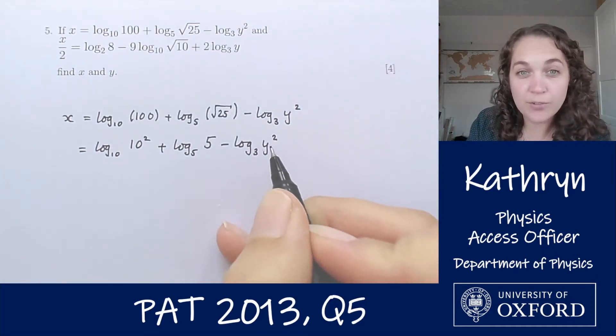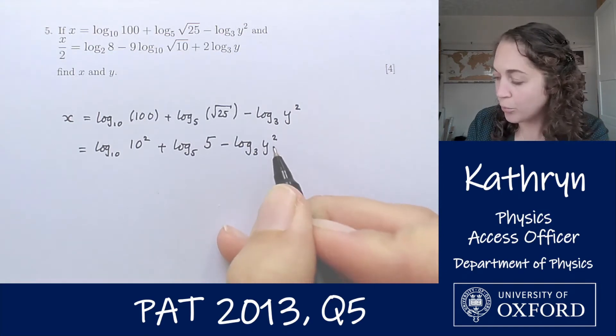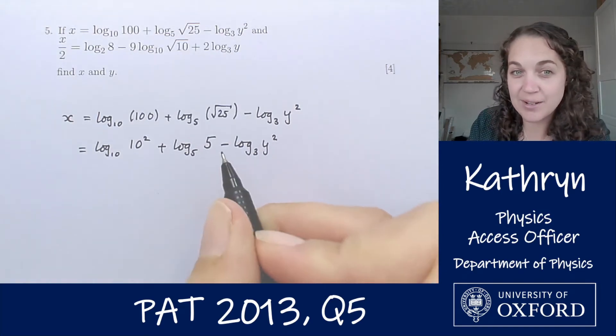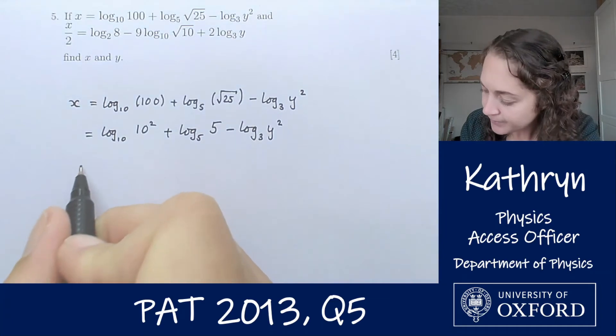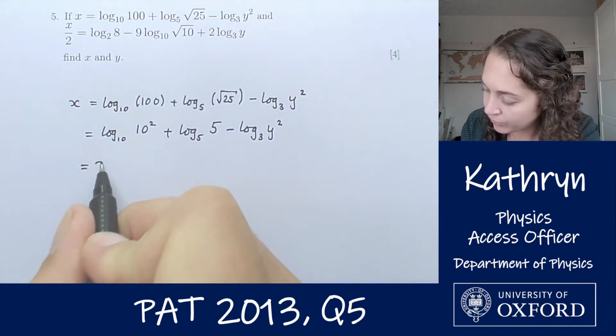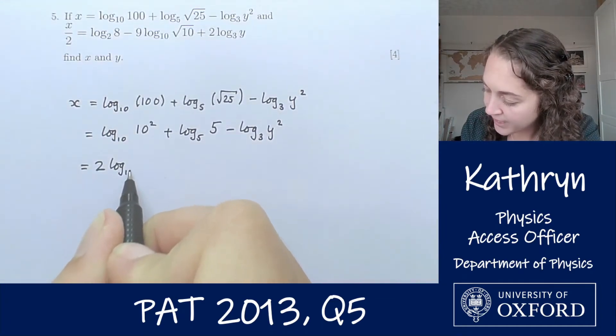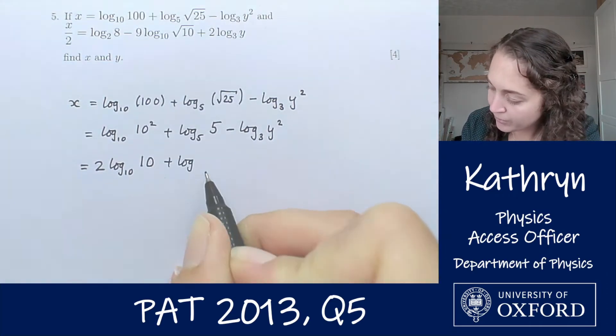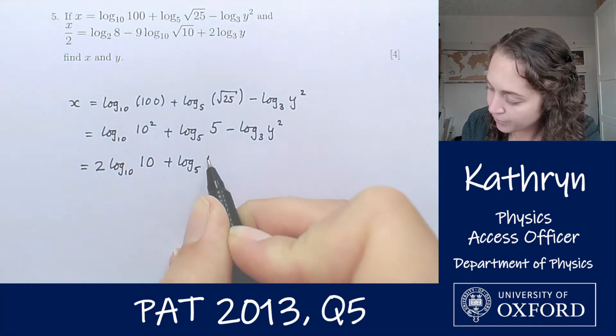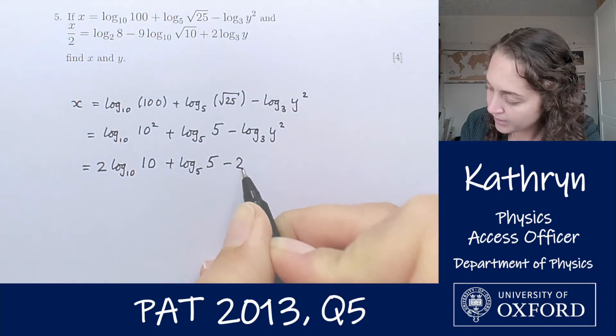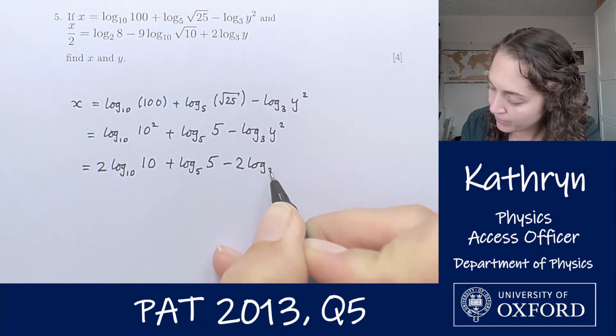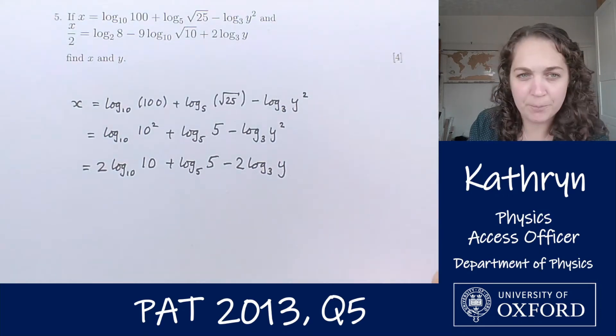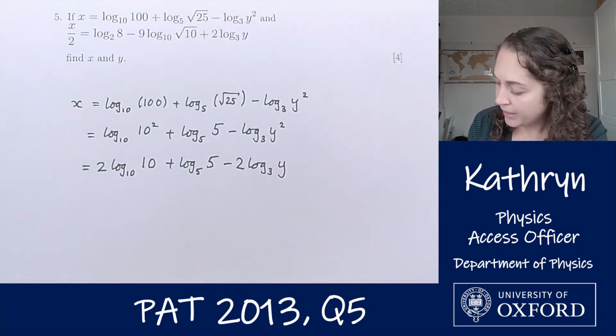Now a log of something to a power, if we remember our log rules we can bring that power down to the front. That will give us 2 log base 10 of 10 plus log base 5 of 5 and then bringing that 2 down as well, we have minus 2 log base 3 of y.